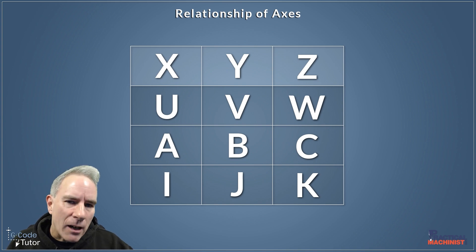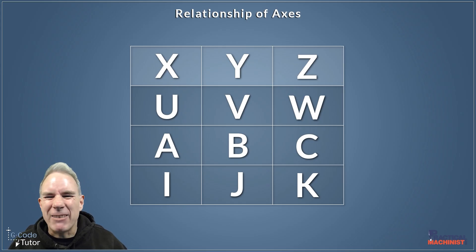So as you can see our X axis relates to U, A and I and so on with our Y and our Z there. So let's have a look at each one of those and how they all work.